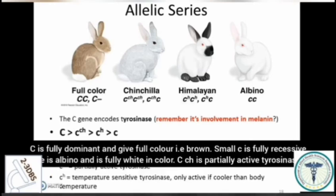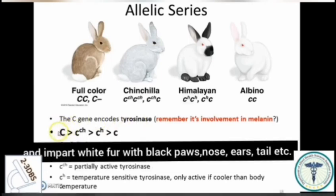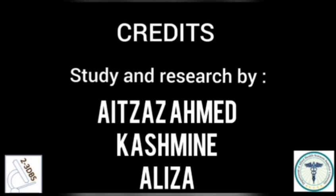The C gene encodes a dominant allele that gives fur color that is brown. The small c allele is fully recessive and imparts black lips with white fur. The CH allele is temperature-sensitive and imparts white fur with black paws, nose, ears, tail, and so on.